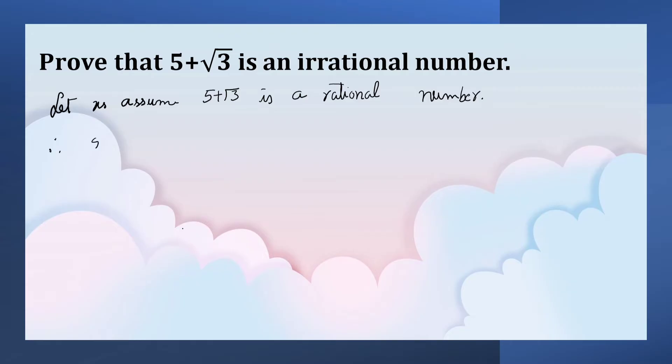Therefore, 5 plus root 3 is equal to A upon B, where A and B belong to natural numbers, B is not equal to 0, and they are co-prime numbers.